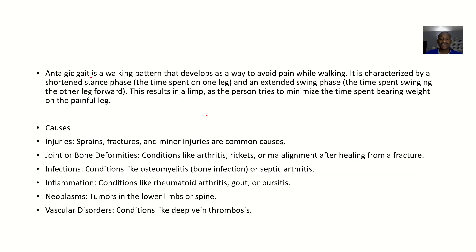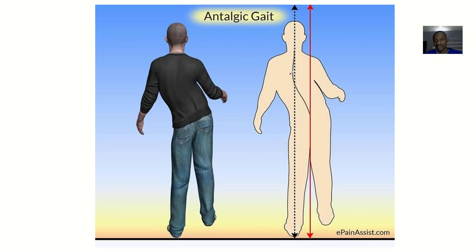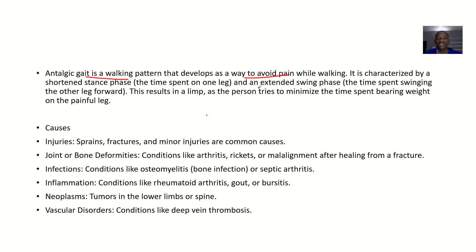Antalgic gait is a walking pattern that develops as a way to avoid pain while walking. If you walk normally, you feel pain, so you are trying to reduce the pain and manoeuvre your way. It is characterized by a shortened stance phase — the time spent on one leg is short — while there is an extended swing phase, which is the time spent swinging the other leg forward.